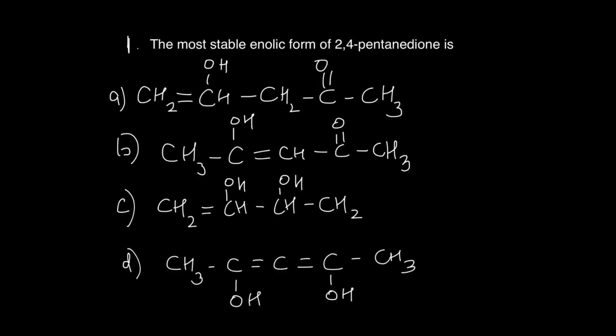Before I solve this question, let us see what an enol is. Enol is made up of two parts: en and ol. Ol means an OH group, and en means C double bond C. So whenever in any compound you have a C double bond C next to an OH group, it is called an enol.